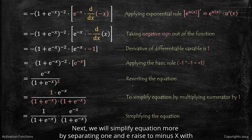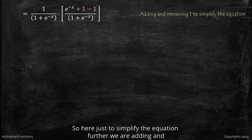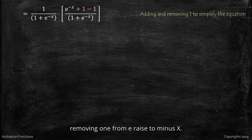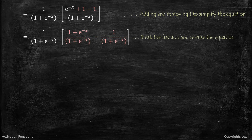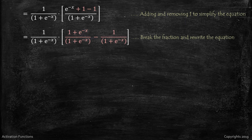We simplify the equation further by separating 1 and e raised to minus x with separate denominators. Then, just to simplify further, we add and remove 1 from the e raised to minus x term, breaking the fraction and rewriting the equation as 1 plus e raised to minus x divided by 1 plus e raised to minus x, minus 1 divided by 1 plus e raised to minus x.